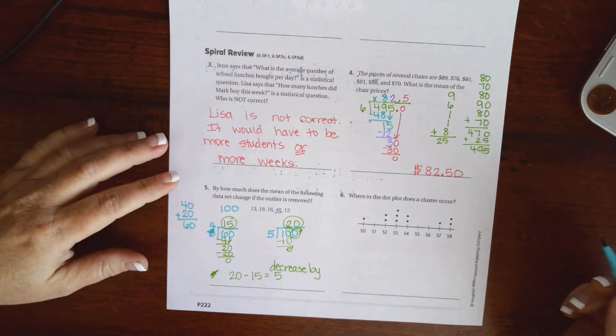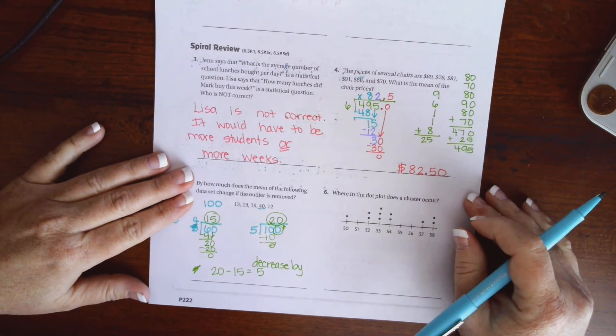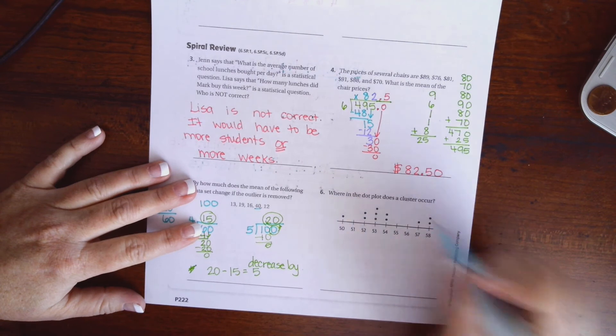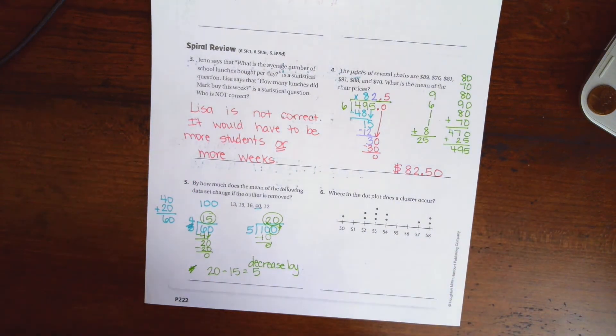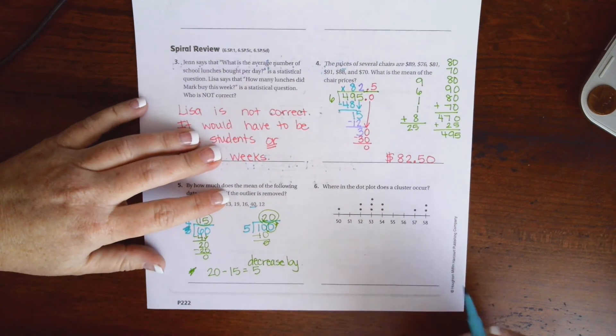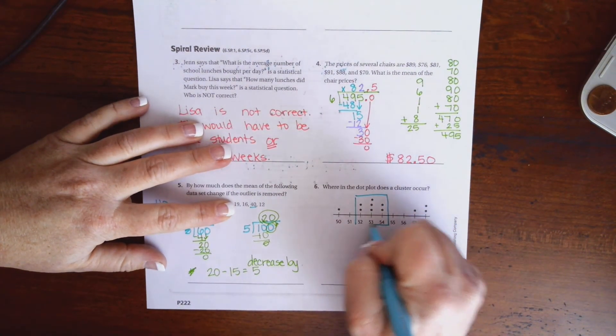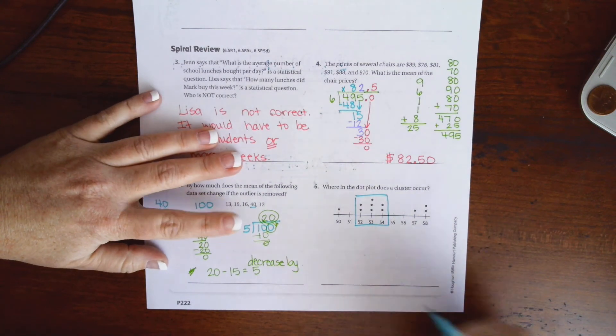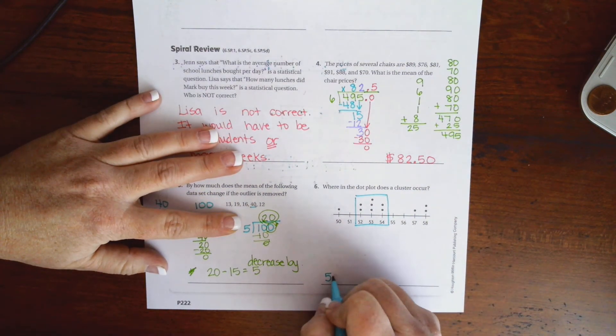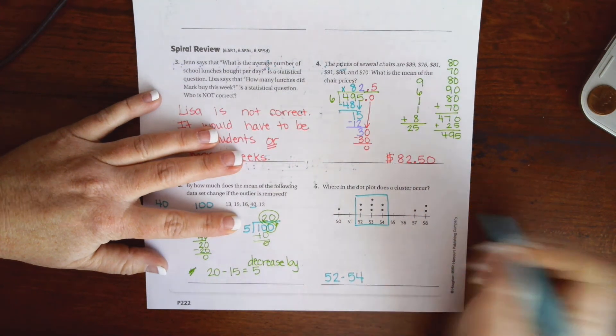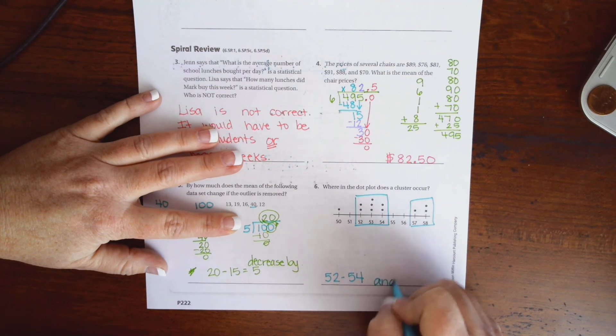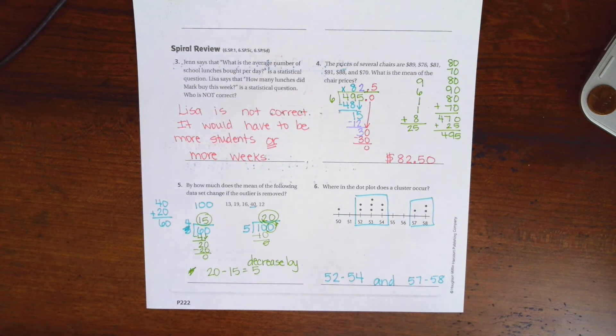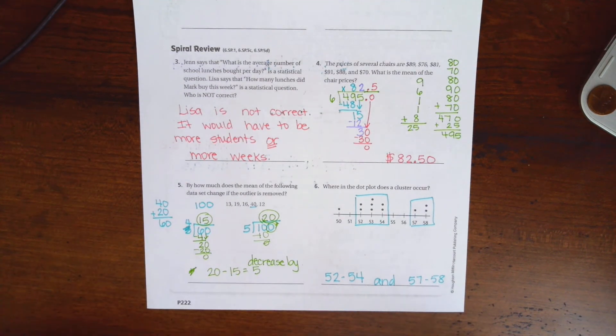Number 6 is, where in the dot plot does a cluster occur? Well, a cluster is a grouping of data. It's a grouping of dots. Well, there's a cluster, so from 52 to 54. We could also say 57 to 58. But the 52 to 54 is that big cluster.